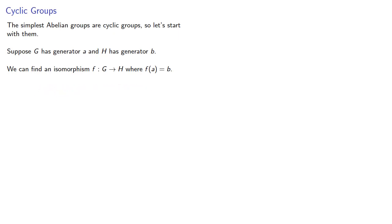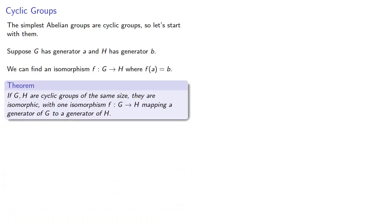And in general, if G and H are cyclic groups of the same size, they're isomorphic, with one isomorphism F from G to H mapping a generator of G to a generator of H.